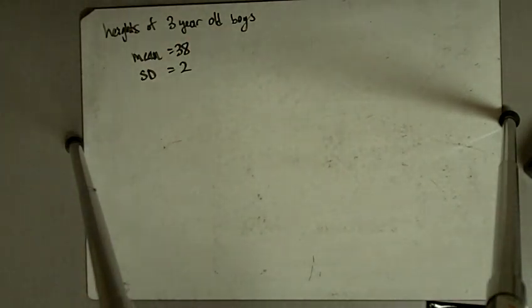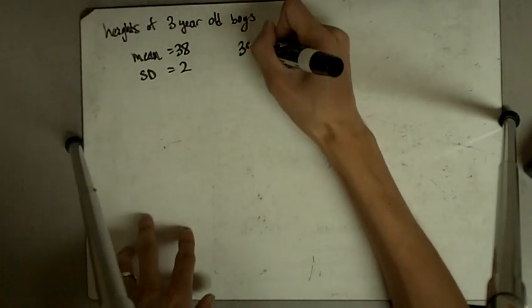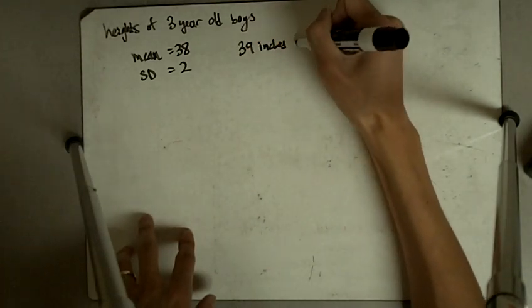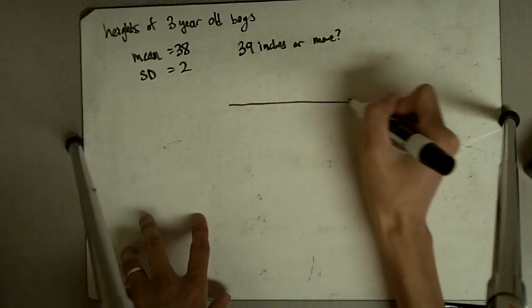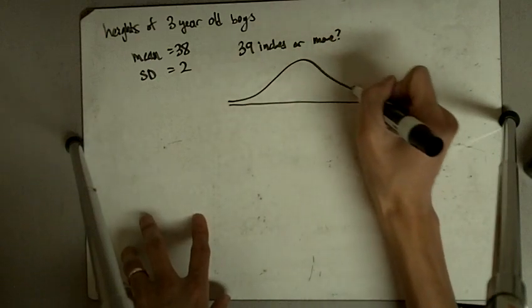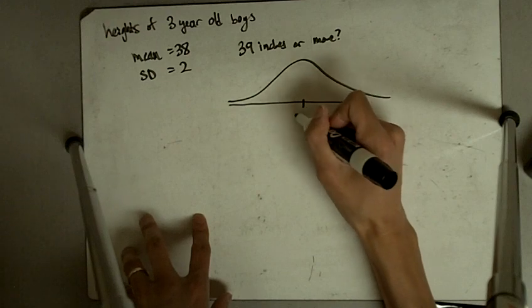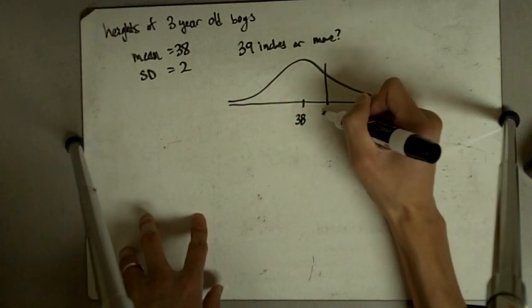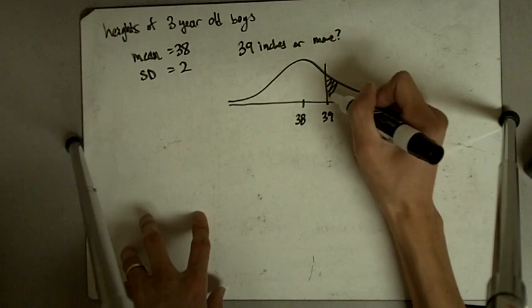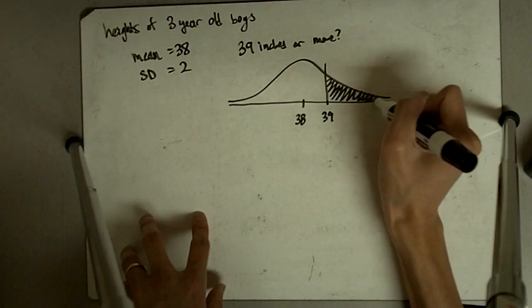And it says, what percentage of 3-year-old boys have a height of 39 inches or more? All right, so in this case, we're expecting to be centered at 38, and we're going to draw a cutoff line at 39, and we want to know what percent is 39 inches or more.